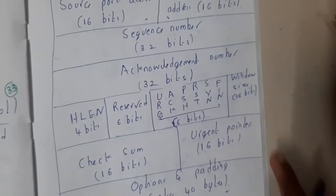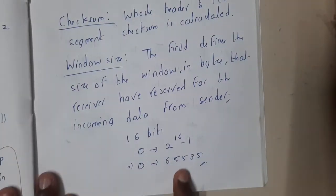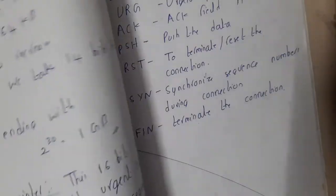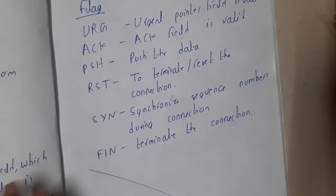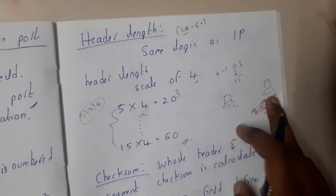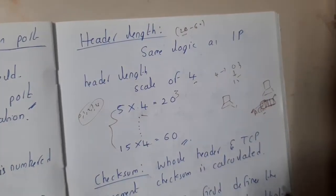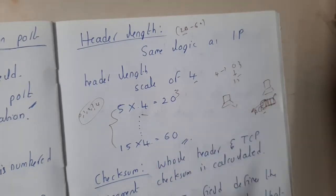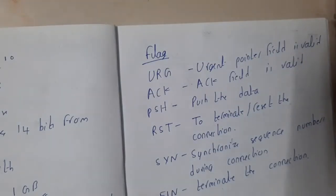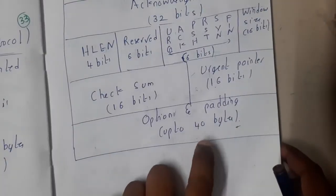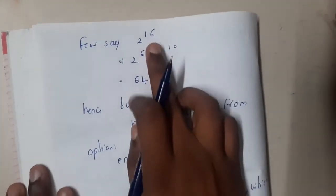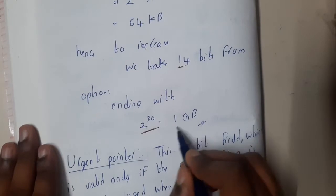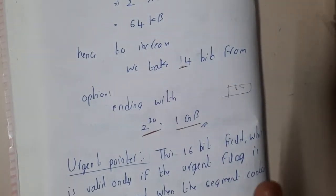The window size field is 16 bits, so it ranges from 0 to 65535, which is 2^6 × 2^10 = 64 KB. However, 64 KB is a limitation — transferring a 700 MB movie with only a 64 KB window would take an enormous amount of time. That is why the 40-byte options field helps: by taking 14 additional bits from it, the total becomes 16 + 14 = 30 bits, giving 2^30 = 1 GB. So the receiver can now have a 1 GB window, allowing the movie to be sent in one go.